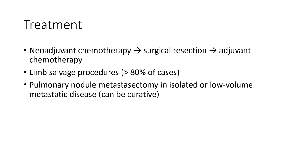Treatment consists of neoadjuvant chemotherapy, followed by surgical resection, then adjuvant chemotherapy. Limb-salvage procedures are used in more than 80% of cases. Pulmonary metastasectomy in isolated or low-volume metastatic disease can be curative.